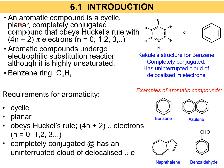Benzene is an aromatic compound that is cyclic, planar, and completely conjugated. It is completely conjugated because as you can see in the benzene structure, there are alternating double bonds. It also follows the Hückel's rule with 4n+2 pi electrons, where n must be equal to 0, 1, 2, 3, and so on. You don't need to know too much detail about this.